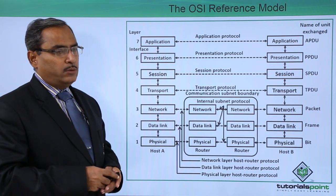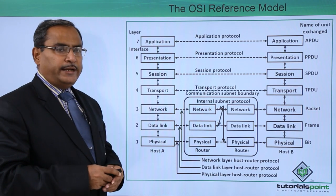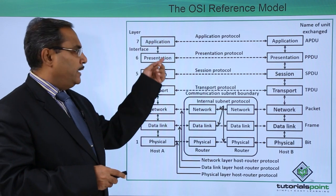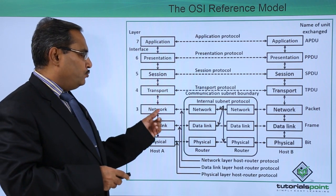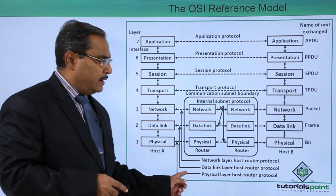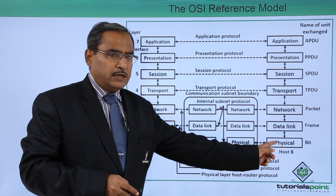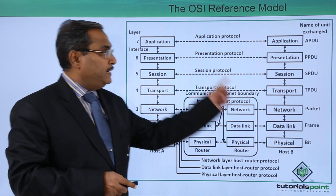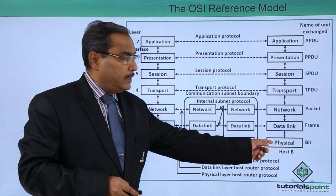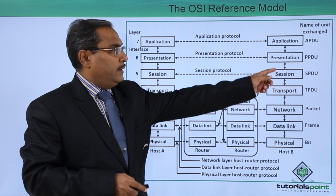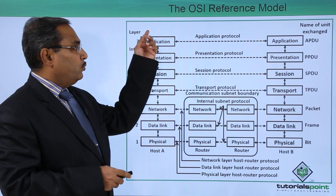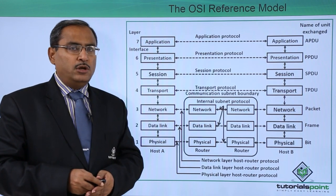The application layer is connected with a host, and that application is connected with another host. This host will be communicating through the application layer. Through all these layers, the physical layer will be there, and then the physical media will be there, with the help of which the data will be transferred from host A to host B. In this way, host A can communicate with host B.